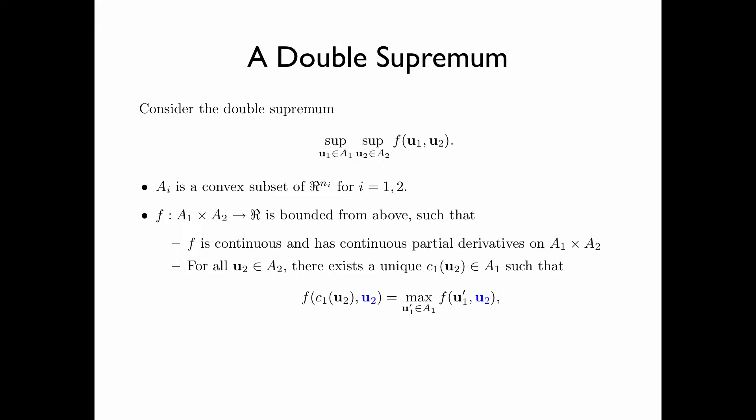Also, for all fixed u_2 in A_2, there exists a unique u_1 in A_1, denoted by c_1(u_2), that maximizes the value of f. That is, f(c_1(u_2), u_2) is equal to the maximum of f(u_1', u_2) over all u_1' in A_1.